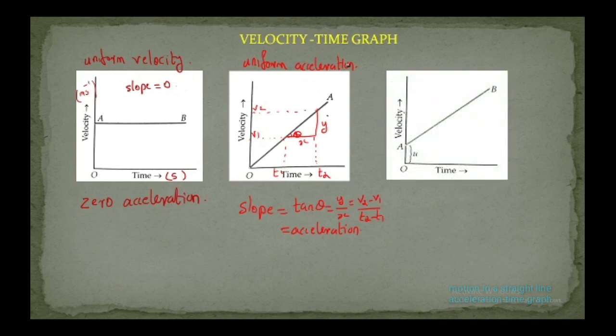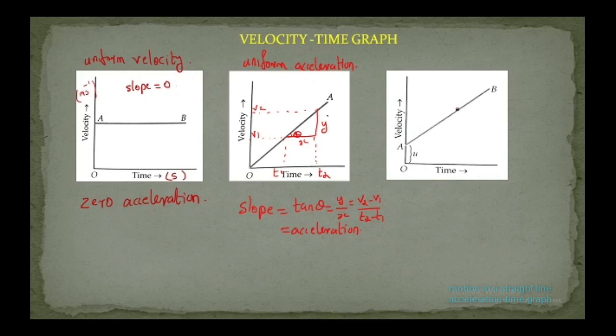The third graph is also a straight line, so it also represents uniform acceleration. The main difference from the previous graph is that it does not pass through the origin — the body already has an initial velocity u. So it moves with uniform acceleration but starts with a non-zero initial velocity u.